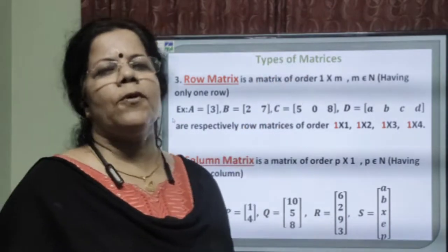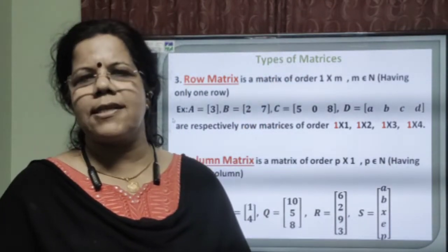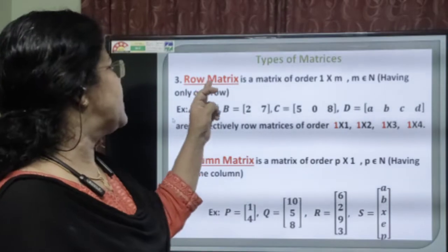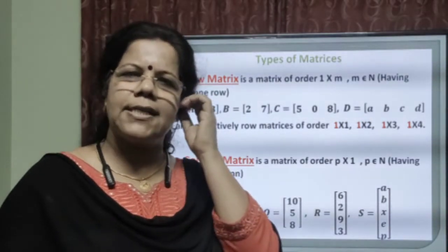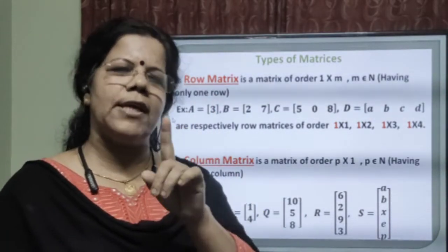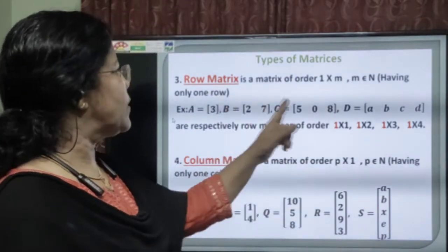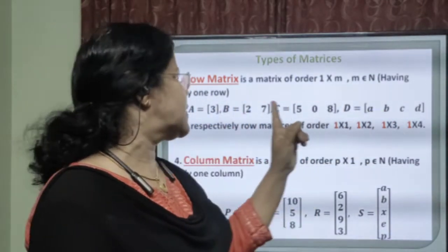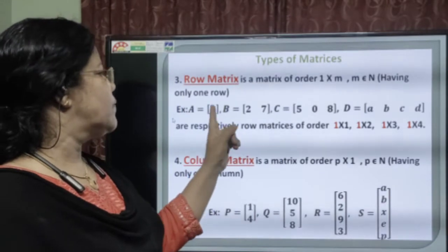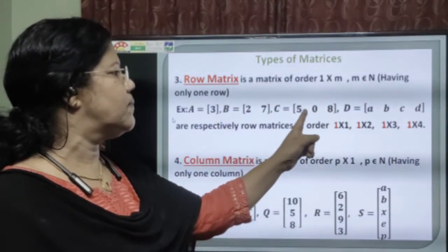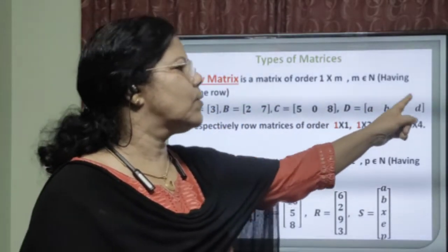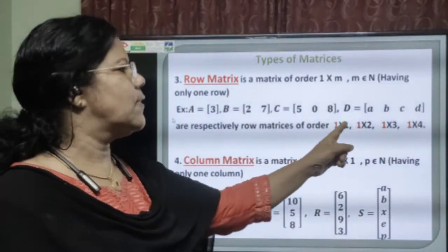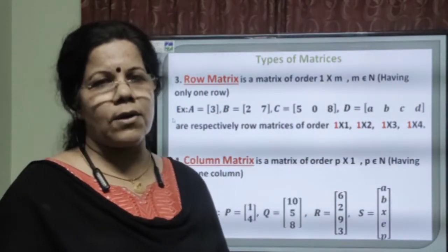Now, there come the types of matrices. How many types of matrices are there? The first type is the row matrix. From the name itself, a row matrix consists of only one row and N number of columns. From the examples, you can see one row with one column, one row with two columns, one row with three columns, and one row with four columns. Generally, it will be a 1 by N row matrix.